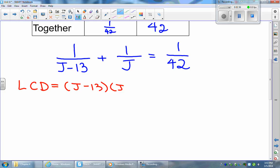j is a unique factor, and 42 is a unique factor. And for our lowest common denominator, it's going to be j minus 13 times j times 42. Now we're going to multiply this by each term.